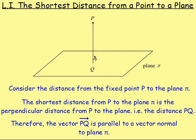Because PQ is going to be at right angles to the plane, it means that it will be parallel to the normal vector. A normal vector is a vector that is at right angles to the plane. So the normal vector to plane pi will be at right angles to the plane, and therefore it's going to be parallel to the vector PQ. Using this information, let's try solving a problem.